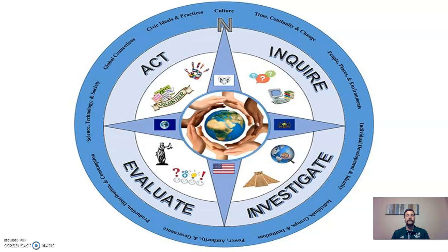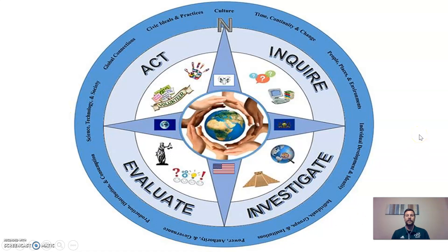I'm going to take just a few minutes and go over some of the elements on this graphic. In class, we're going to be using this graphic as a way to analyze history in terms of this course. What we've done is used the 10 themes here around the outer ring. These are themes established by the National Council for Social Studies — not something we just made up.